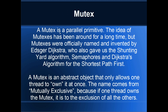So the first word we're looking at today: the mutex. A mutex is a parallel primitive, which means it's an abstract data type that helps us in parallel programming. The idea of mutexes has been around for a really long time, but they were officially named as a parallel primitive by Edsger Dijkstra, who also gave us the shunting-yard algorithm, semaphores, and Dijkstra's algorithm for shortest path first. A mutex is an abstract data type that only allows one thread to own it at once. The name comes from mutually exclusive — if one thread owns the mutex, none of the other threads can own it.